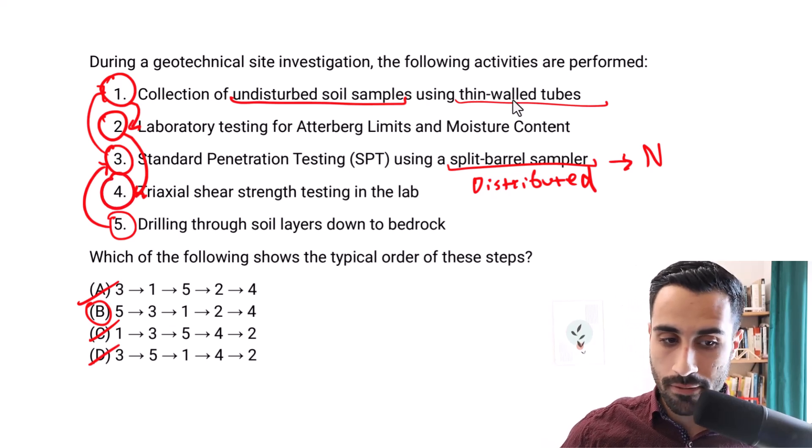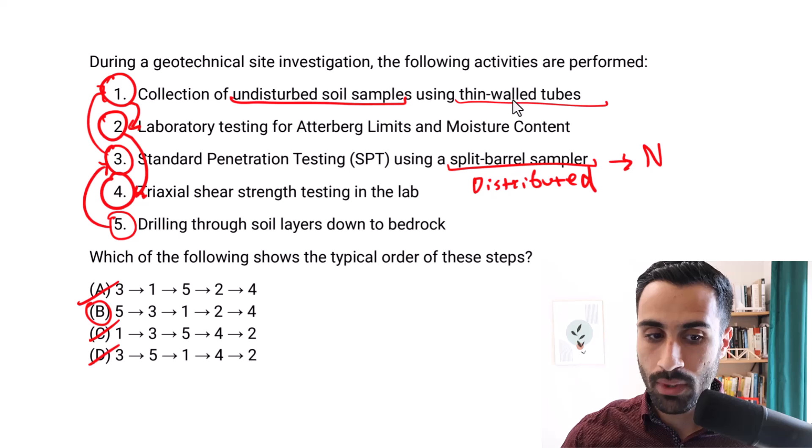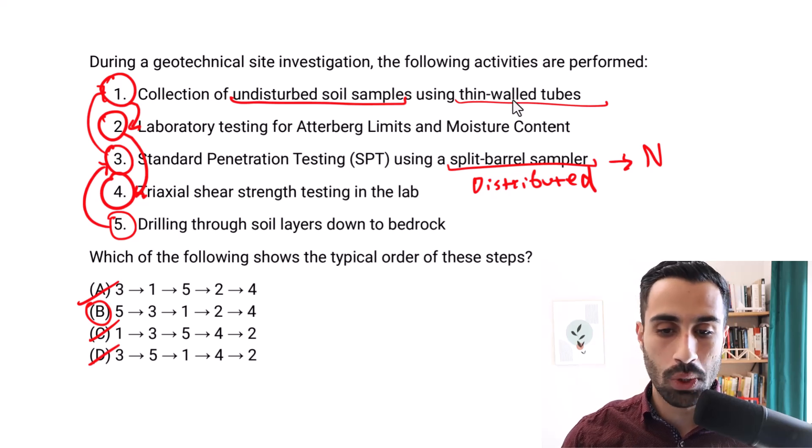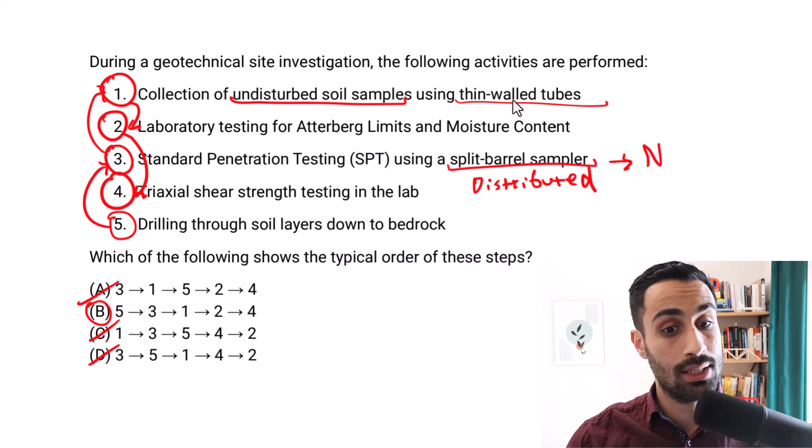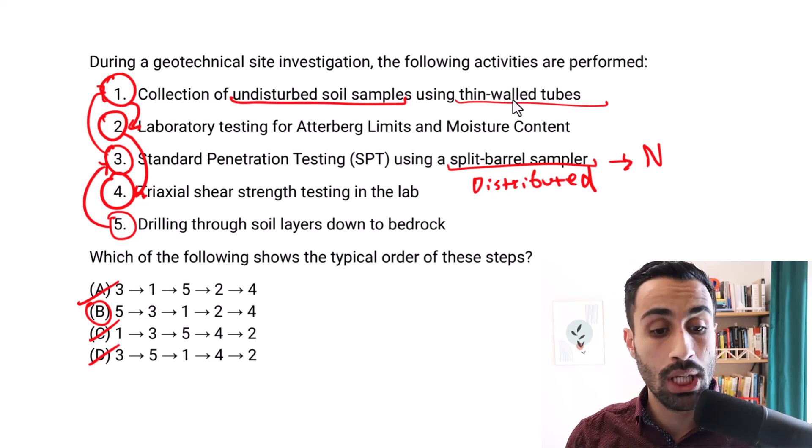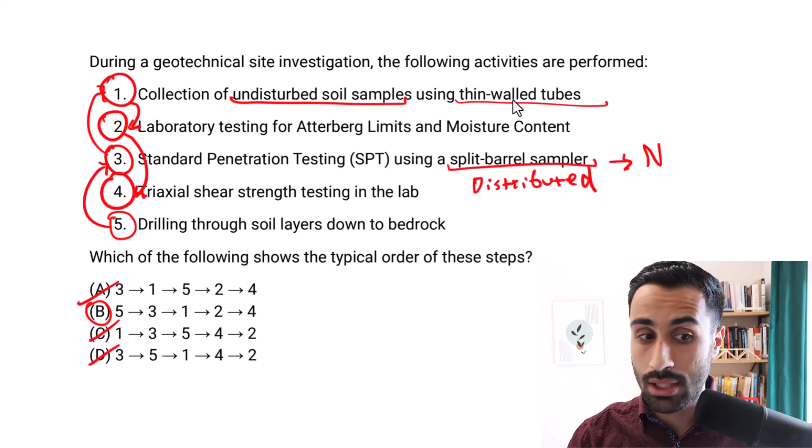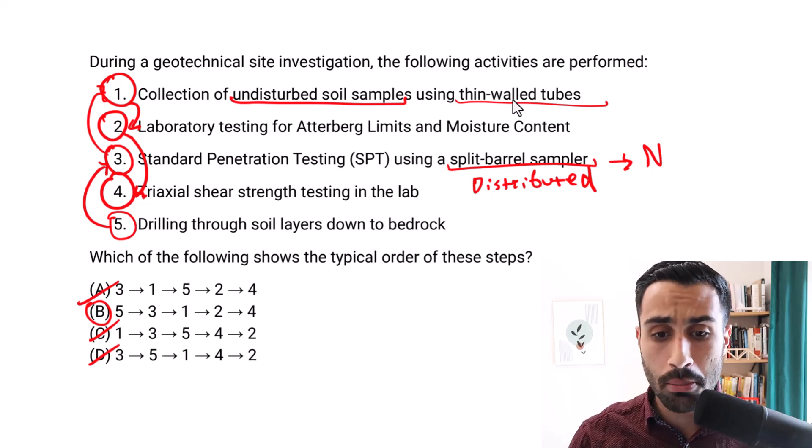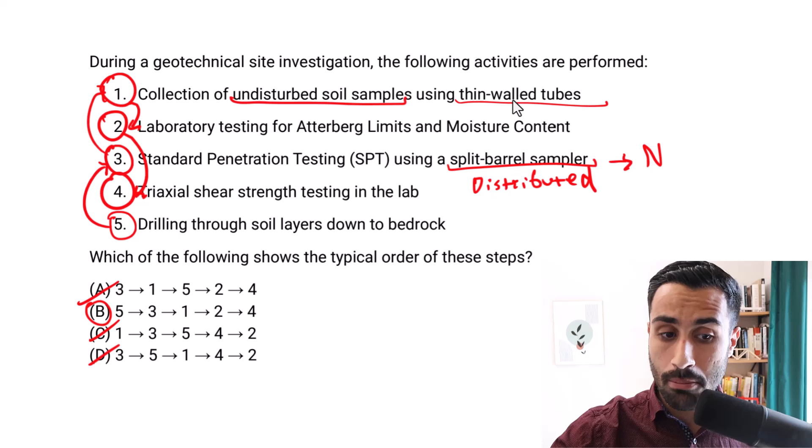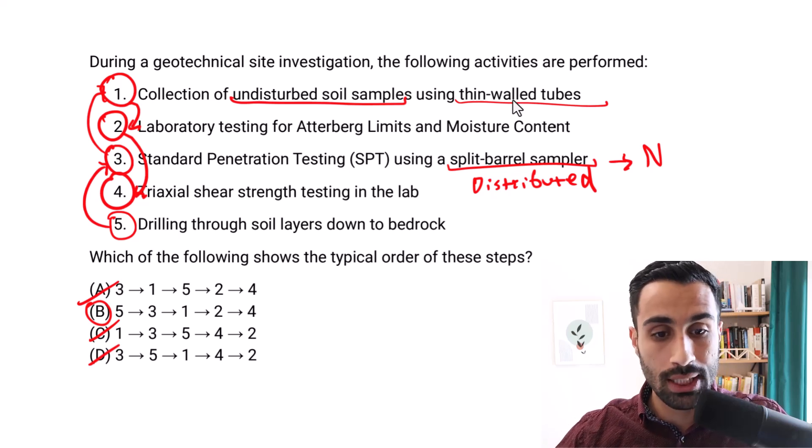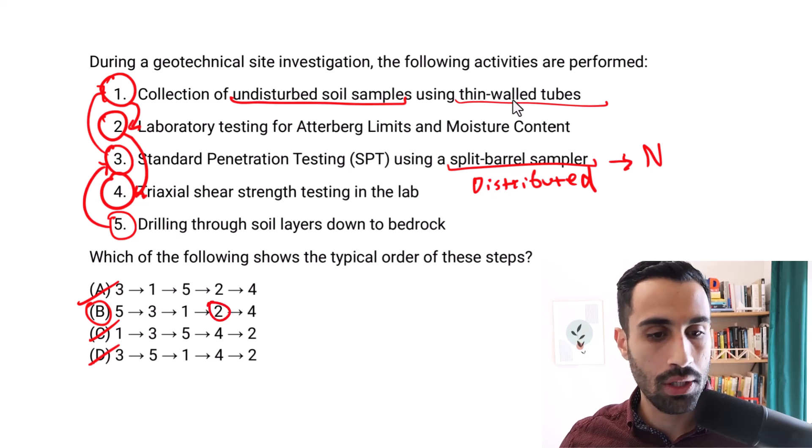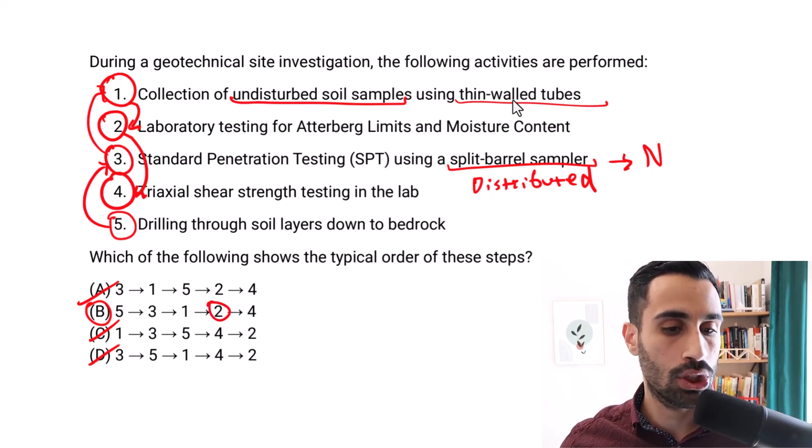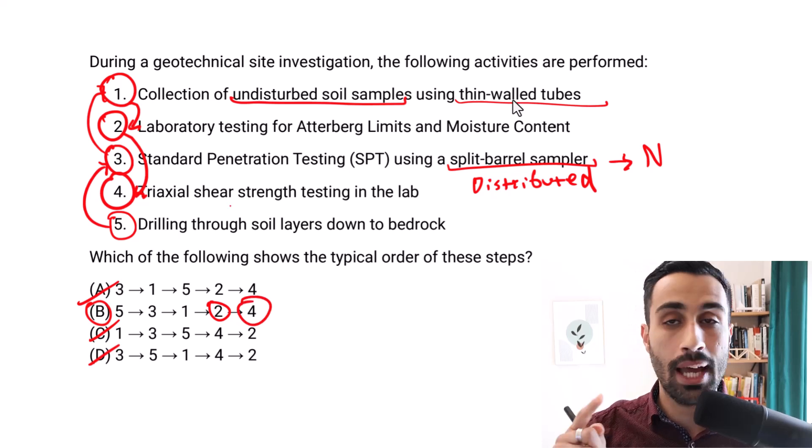So the steps are five. We go from five to three. From the standard penetration test, we can get disturbed soil samples. We go back to number one. We collect at the same time undisturbed soil samples. Then the first testing that we do is not going to be the compression or mechanical testing. It's going to be classification, Atterberg limits, moisture content. So that's why we go to two here. Then at the very end, we finish off with mechanical testing like example, triaxial test at number four.